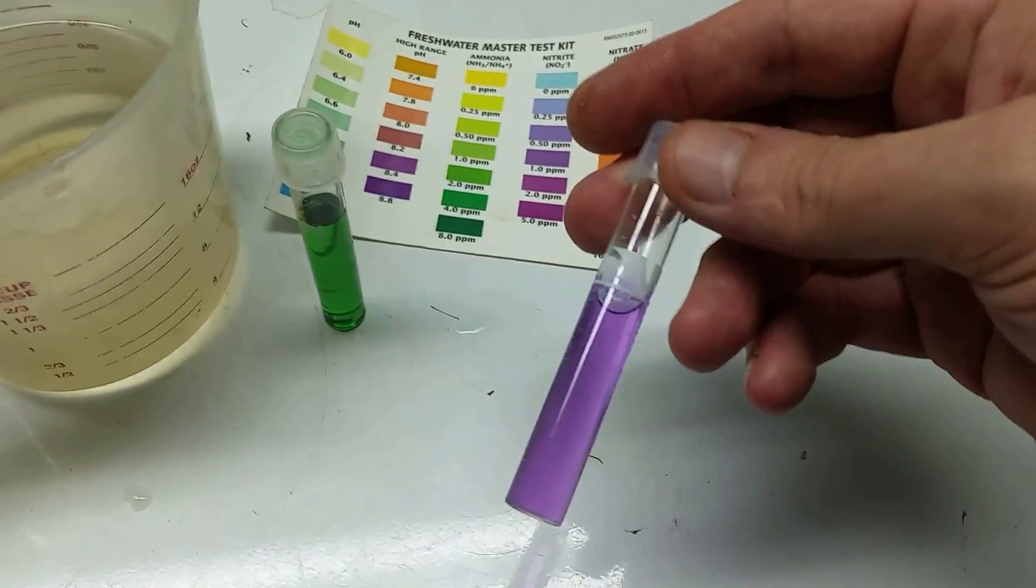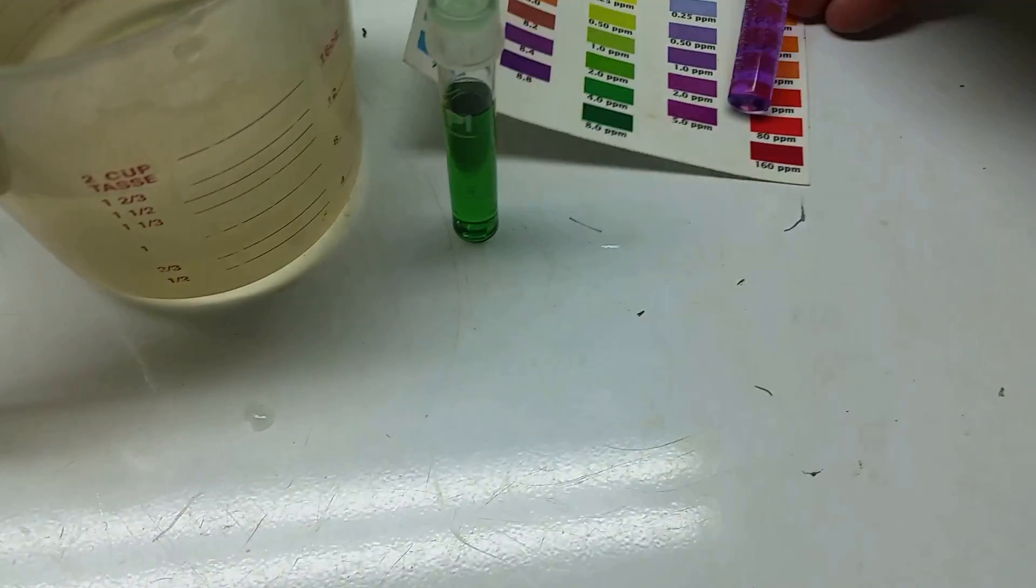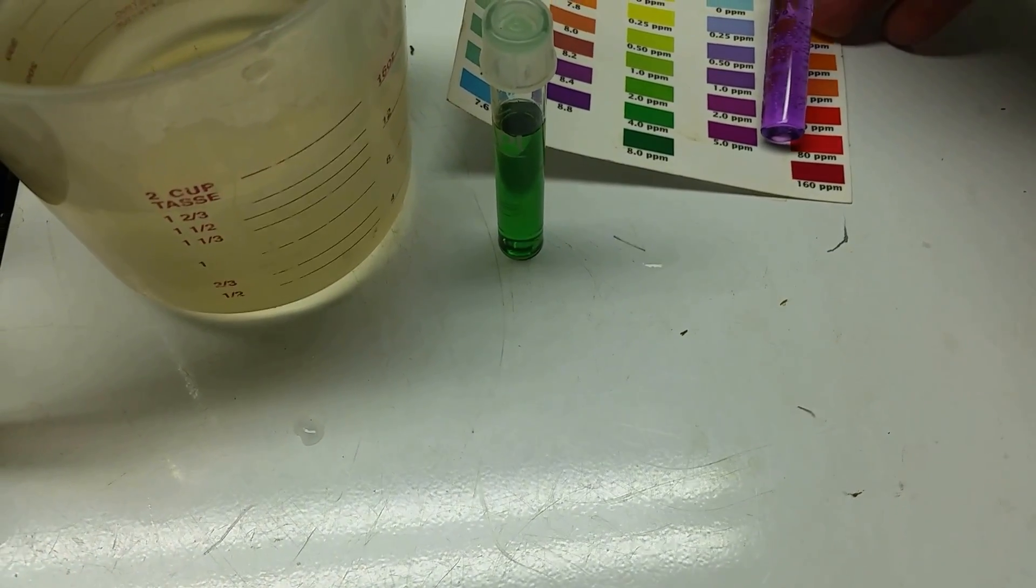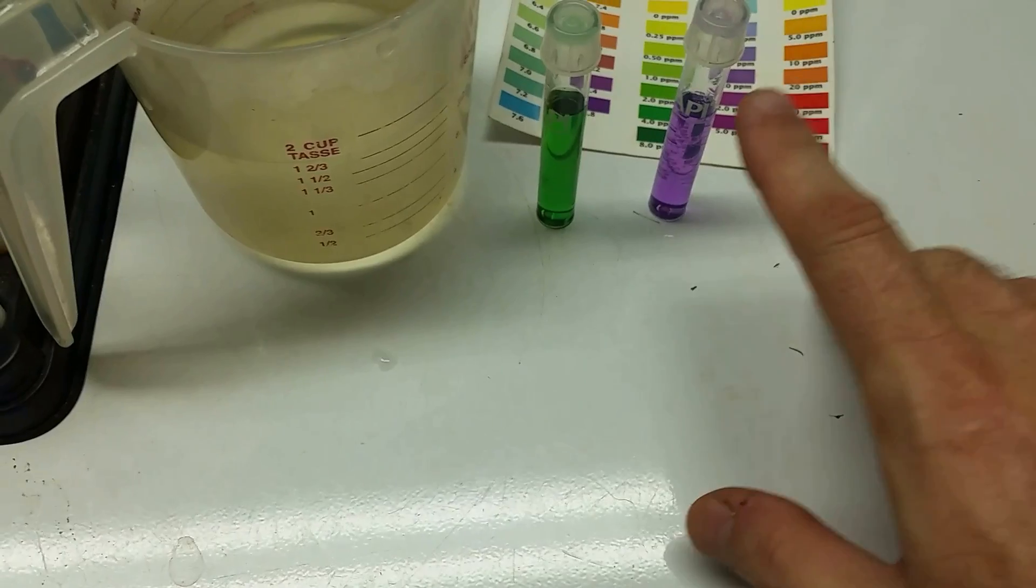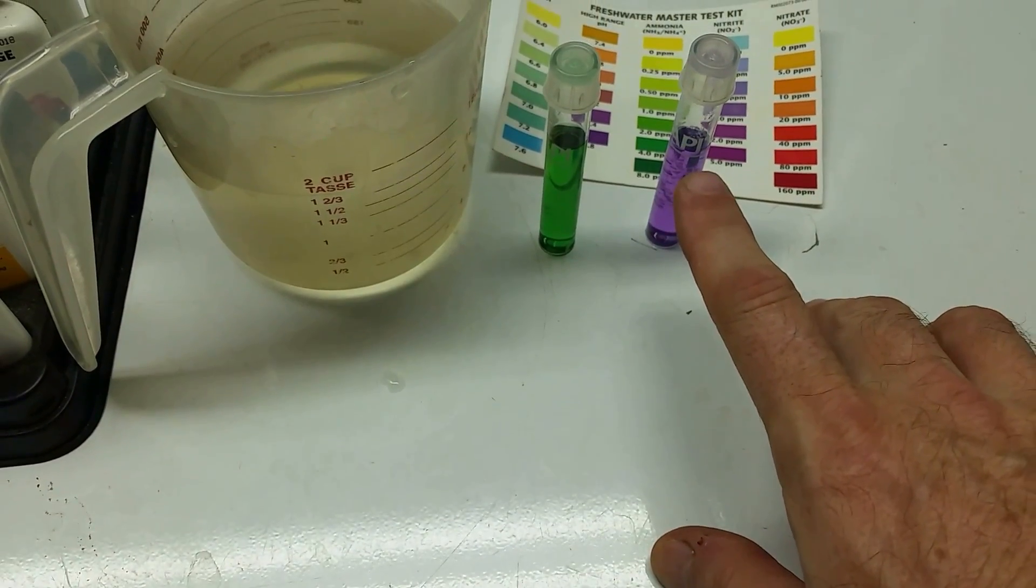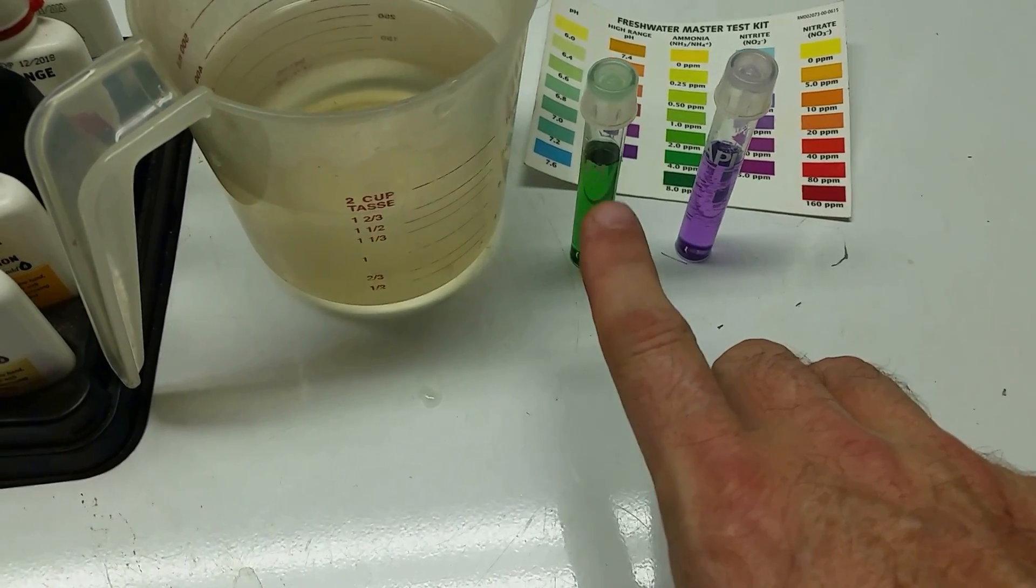And this is the nitrates. So we're looking at probably between one and two parts per million on the nitrites too. And the nitrites are bad and can kill a fish even at low levels like that. Ammonia is really bad and definitely at two parts per million can be very deadly.